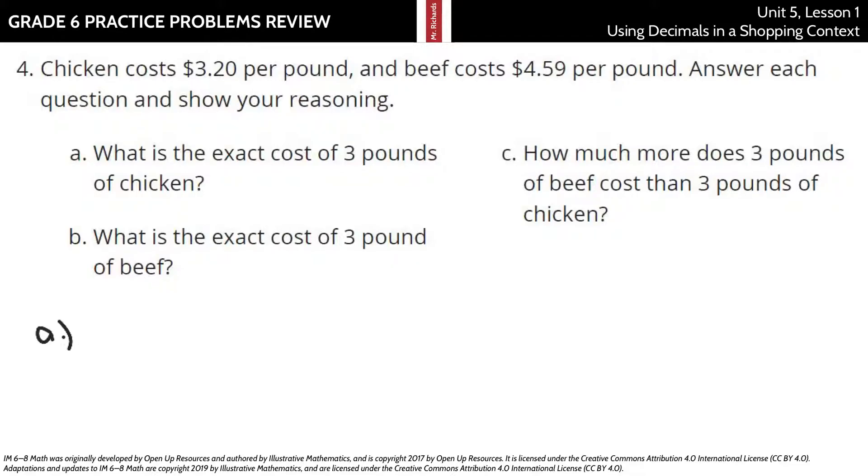In A, what is the exact cost of 3 pounds of chicken? We can take $3.20 and multiply by 3. 3 times 0 is 0. 3 times 2 is 6. 3 times 3 is 9. So we're going to have $9.60. Could you have also done $3.20 plus $3.20 plus $3.20? Sure.